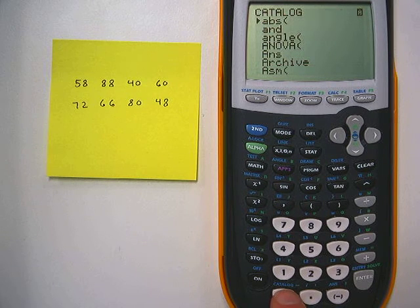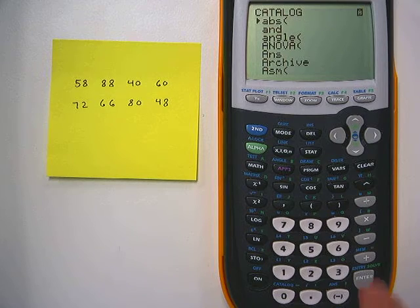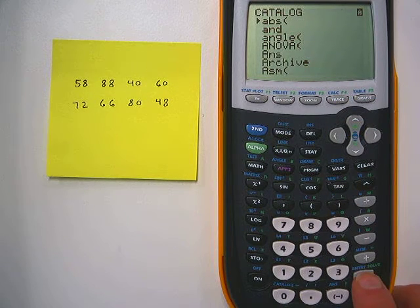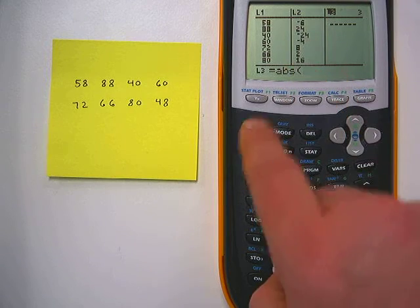We're going to hit the 2nd key and then you notice above 0 it says catalog. Catalog is a list of every command your calculator can do. This can be a very useful tool. You notice the first one is ABS. That is short for absolute value.